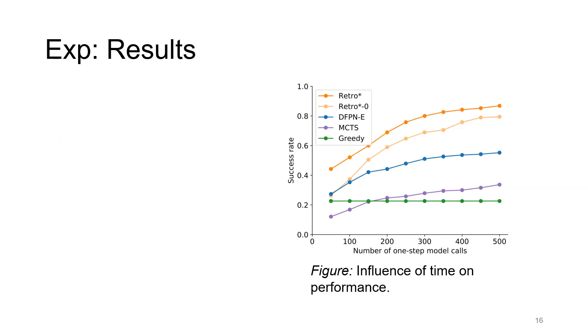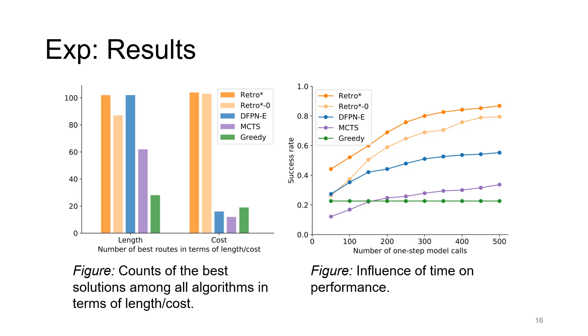So here are our experimental results. In terms of the success rate, both RetroStar and RetroStar 0 outperform all the baselines by a large margin. And we can see that the learned version, RetroStar, is doing better than the not-learned version, RetroStar 0. And then in terms of the solution quality, on the right-hand side of this bar chart, we can clearly see the benefits of using our algorithm.